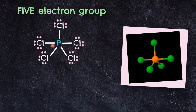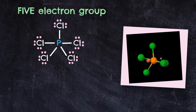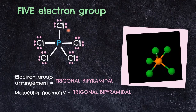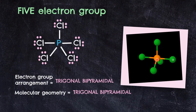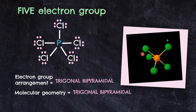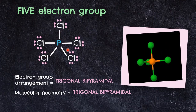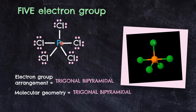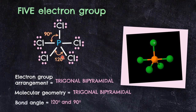For 5 electron groups, the central atom will have more than 8 electrons, representing an expanded octet — an exception to the octet rule. There will be 4 molecular geometries possible. The first is PCl5, with all 5 bonding pair electrons surrounding the central atom. The 3D shape is the same as the electron group arrangement — trigonal bipyramidal — with no extra repulsion from lone pairs. The 3 equatorial chlorines form the trigonal base and the 2 axial chlorines form the linear part, with bond angles of 120° and 90°.